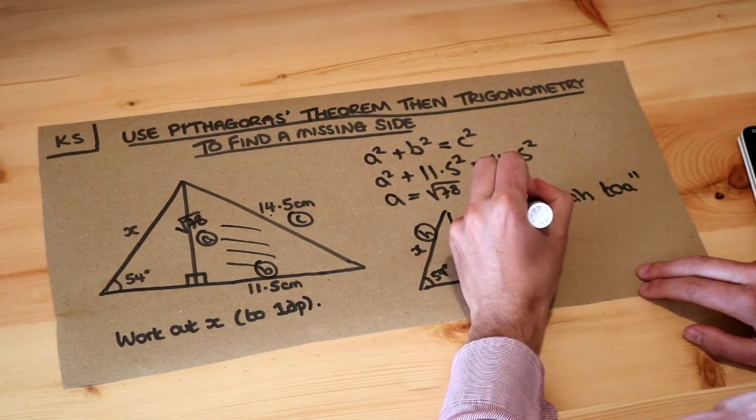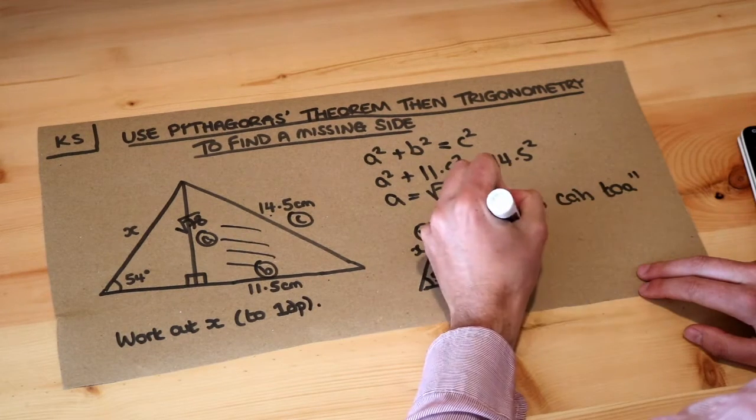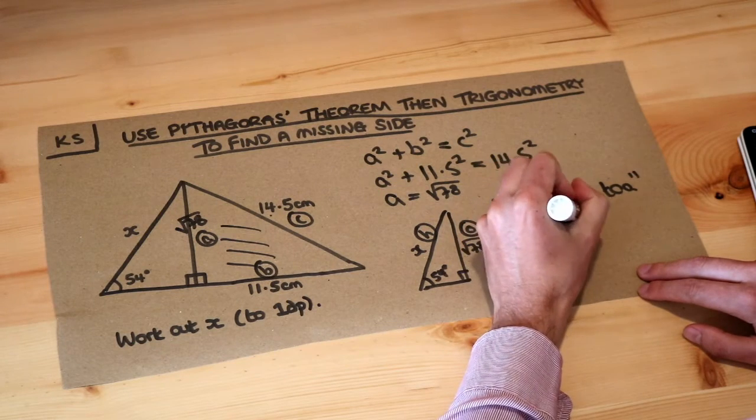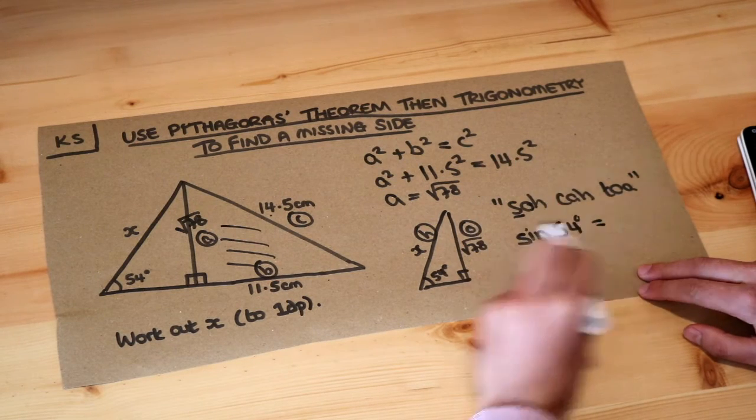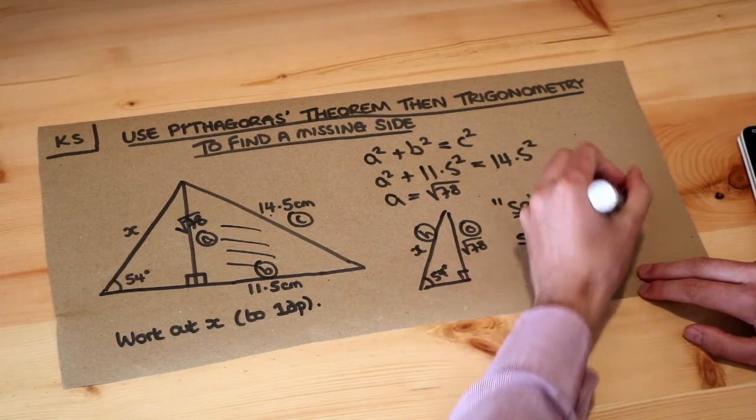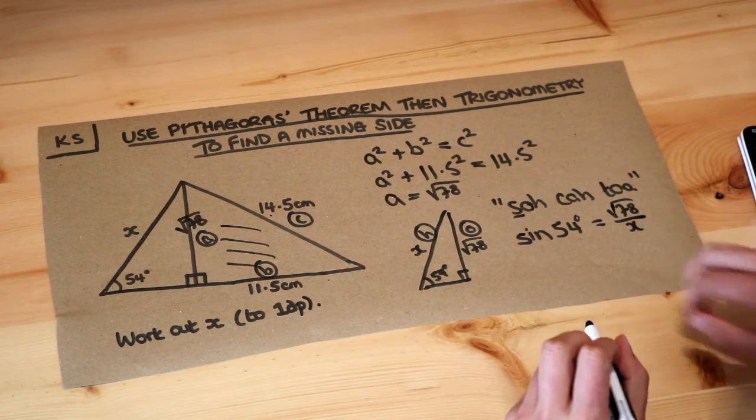If you think about SOHCAHTOA we're involving O and H - that's SOH, so it's sine we want. So we do sine of the angle, the 54 degrees, is equal to the opposite which is the √78 over the hypotenuse which is x.